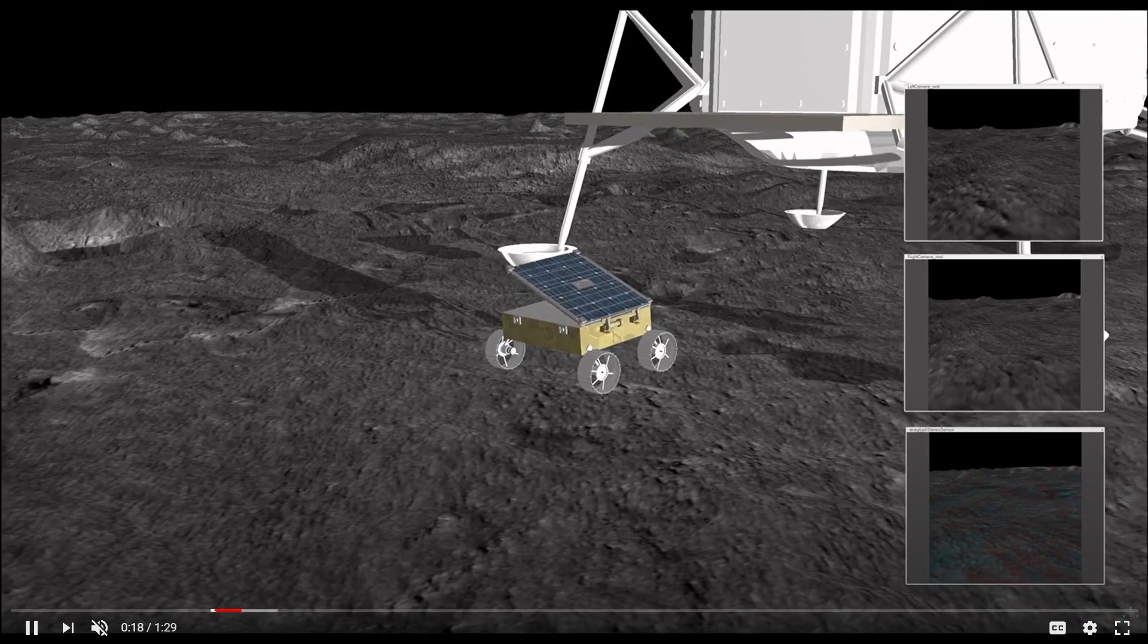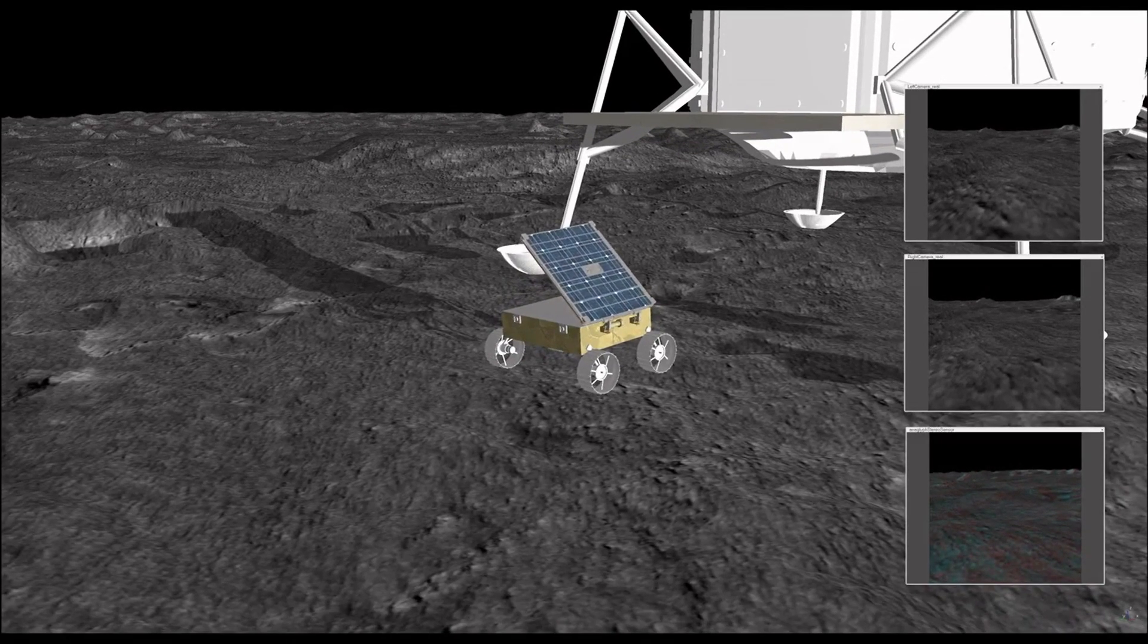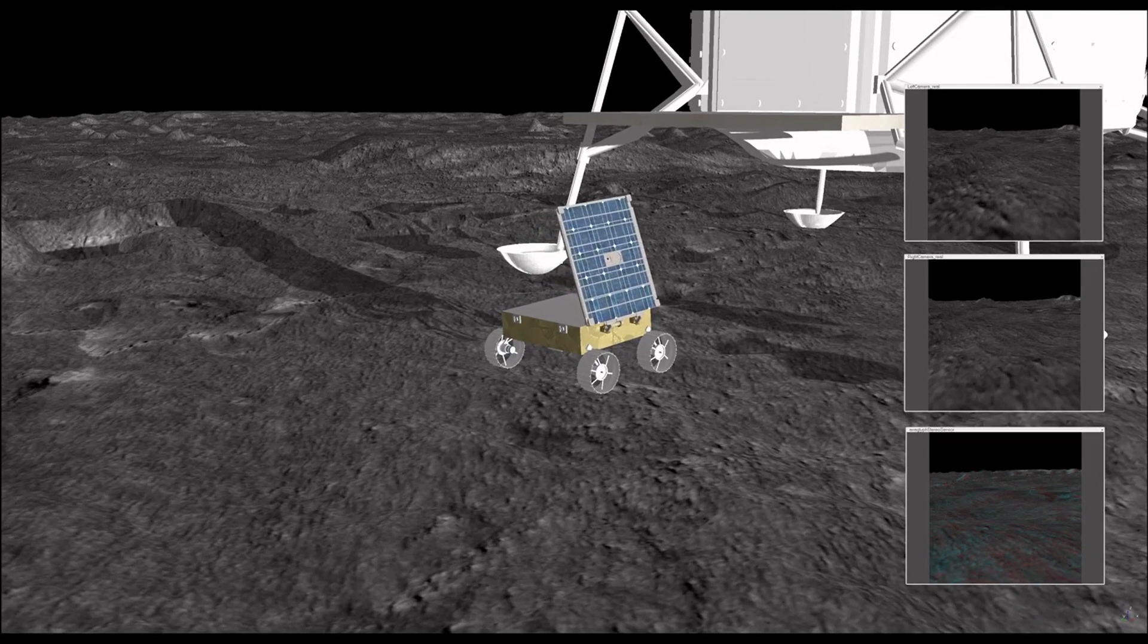Moonranger's solar array raises vertically to catch the sun that is always low on the horizon at the pole.